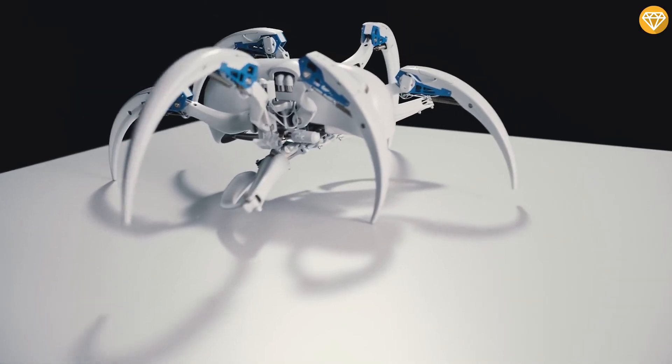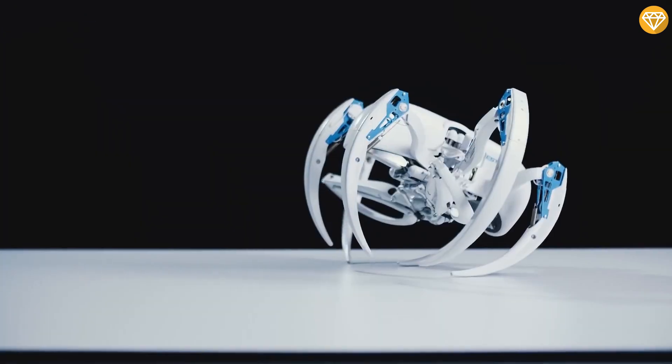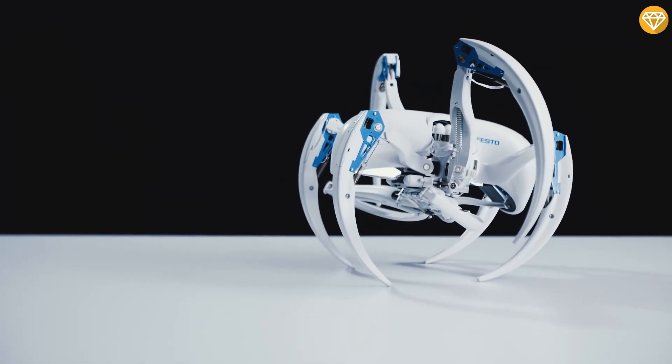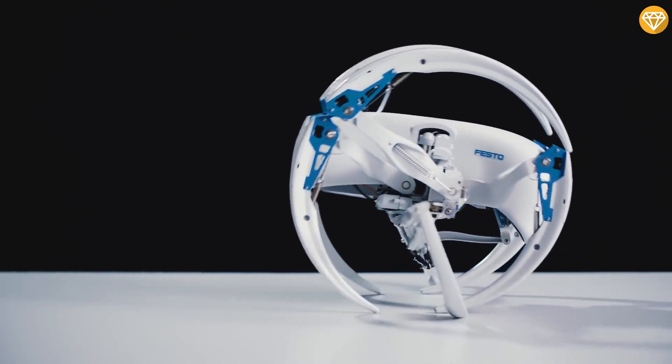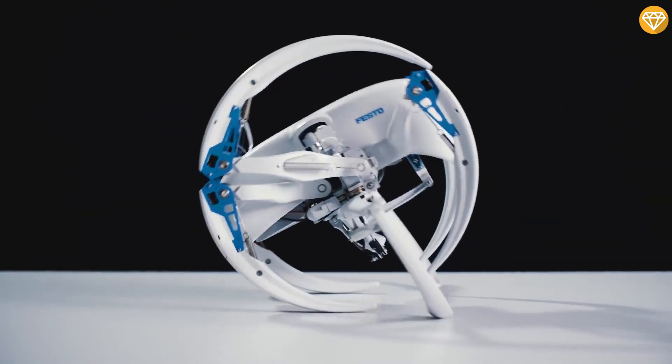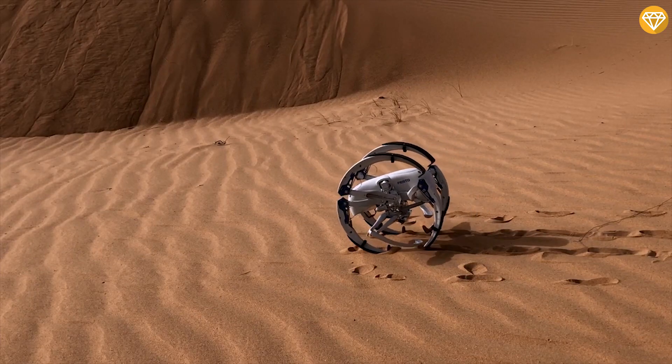The Bionic Wheelbot maintains stability while walking, turns in place, and maneuvers on various terrains. By folding its legs to form a wheel and extending them while rolling, it avoids getting stuck and can move across rough surfaces, like its desert-dwelling inspiration.